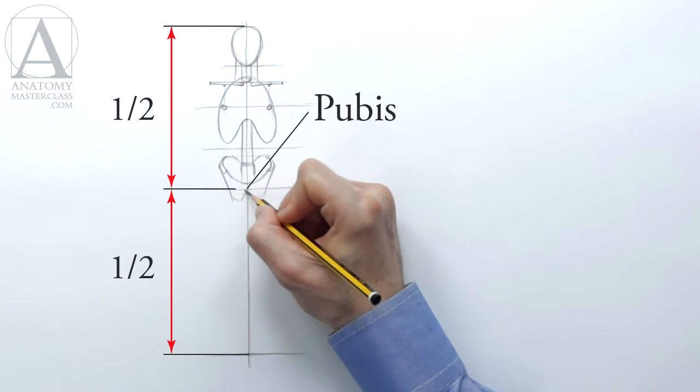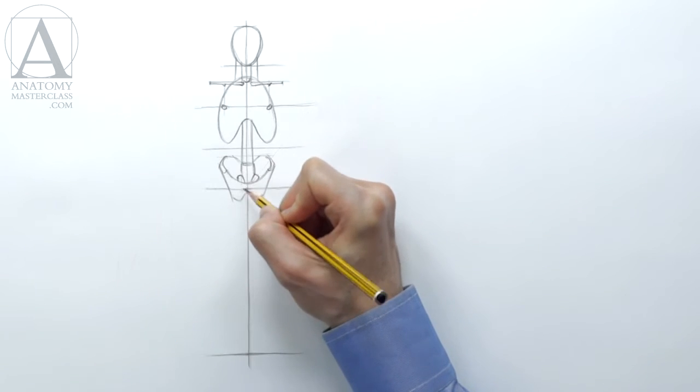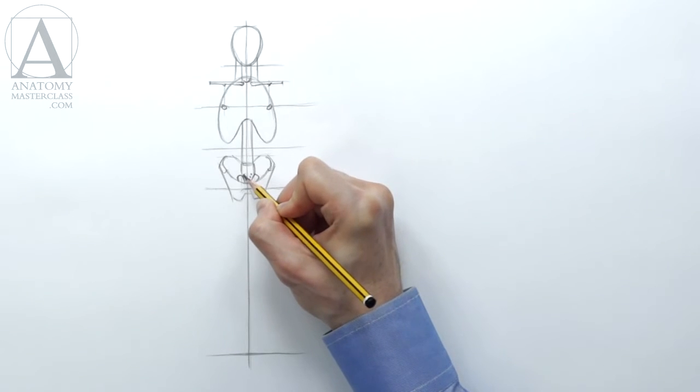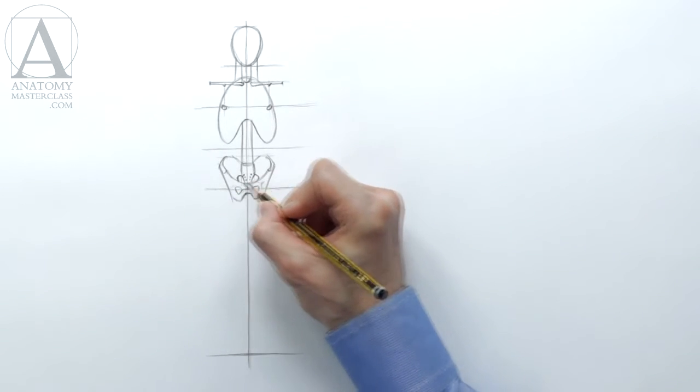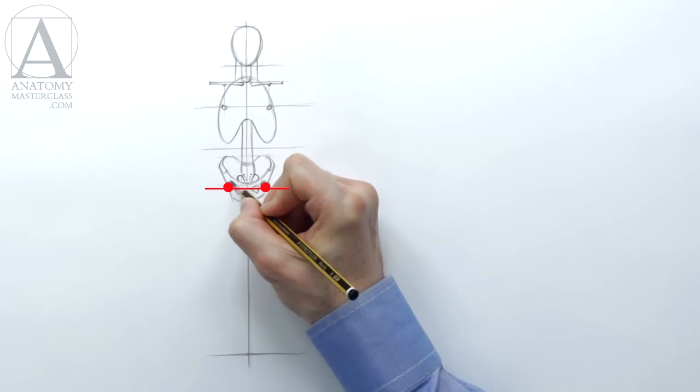The pubis is located exactly in the middle of the male figure with classical proportions.